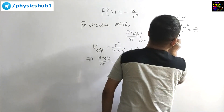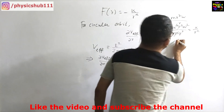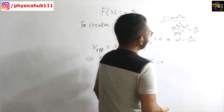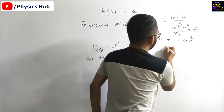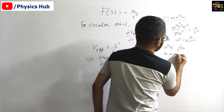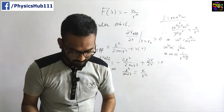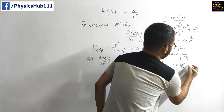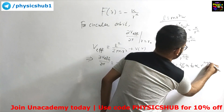So you get ω² = k / (m · r^(n+1)). Therefore ω² is proportional to 1 / r^(n+1), and ω is proportional to 1 / r^((n+1)/2). Now the time period T = 2π/ω, so T is proportional to 1/ω, which means T is proportional to r^((n+1)/2).